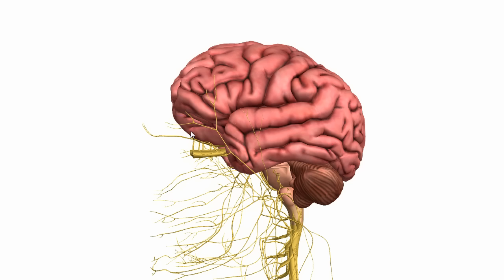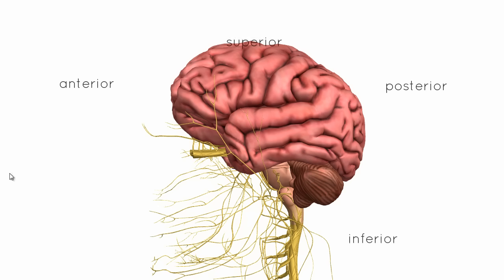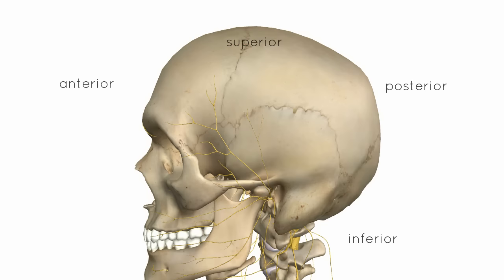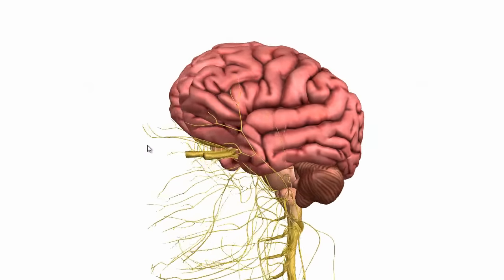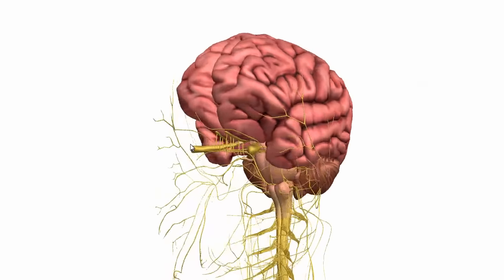We'll start off by looking at the brain stem. We're looking at a side view of the brain. Anterior is this side, posterior is this side, and obviously superior and inferior. So you can see the brain and how it sits there. I'm just going to rotate it around and we'll take a look at the brain stem.